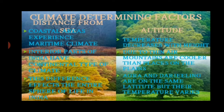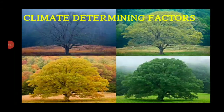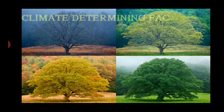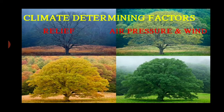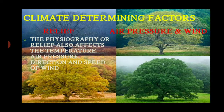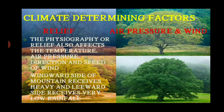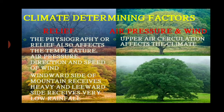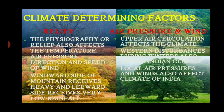Agra and Darjeeling are on the same latitude but their temperatures vary a lot. Two further determining factors are relief features and air pressure and winds. Relief features or physiography affect temperature, air pressure, direction, and speed of wind. The windward side of a mountain receives heavy rainfall while the leeward side receives very low rainfall. Western disturbances during winters and local air pressures and winds also affect the climate of India.